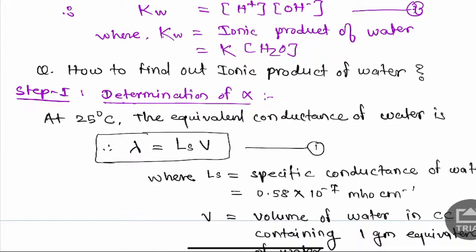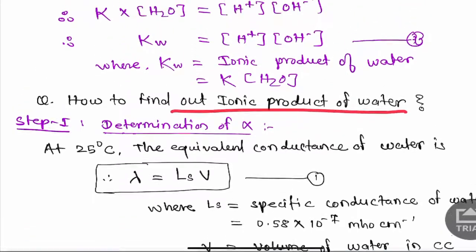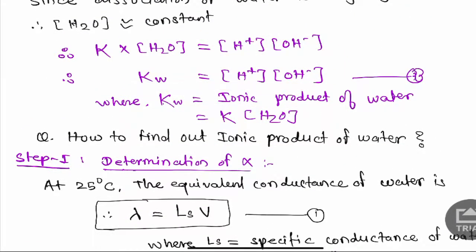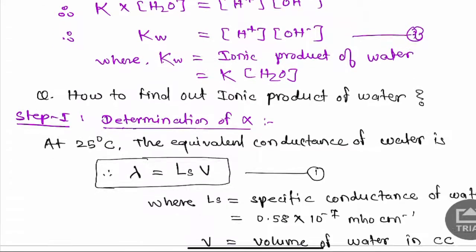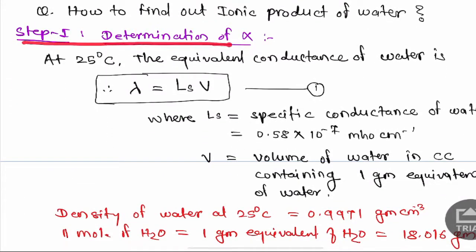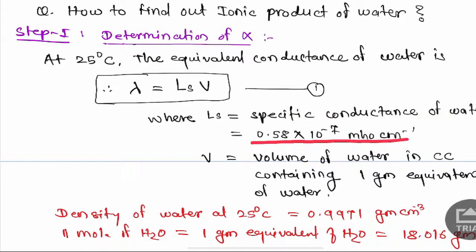Now how do we find the value of Kw? It is calculated in two steps. The first step is determination of the degree of dissociation or ionization. At 25°C, the equivalent conductance of water equals specific conductance (Ls) multiplied by the volume of water (V). Ls, the specific conductance of water, is observed to be 0.58 × 10⁻⁷ mho per centimeter. V is the volume of water in cm³ containing 1 gram equivalent of water.